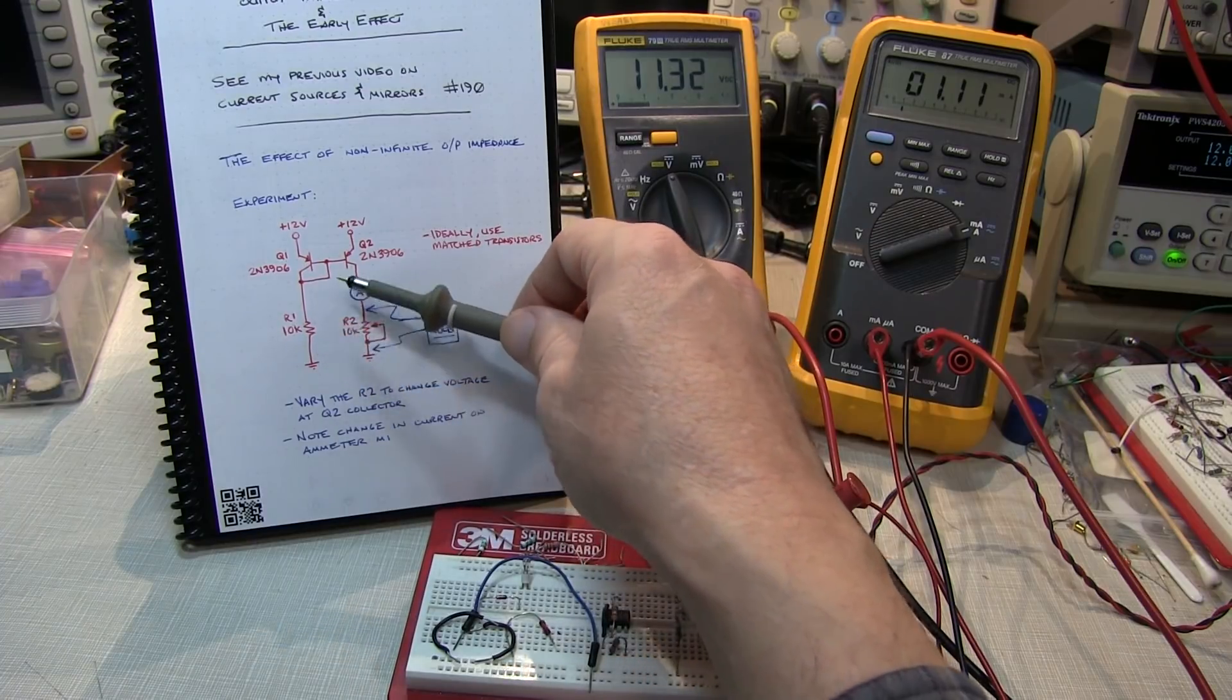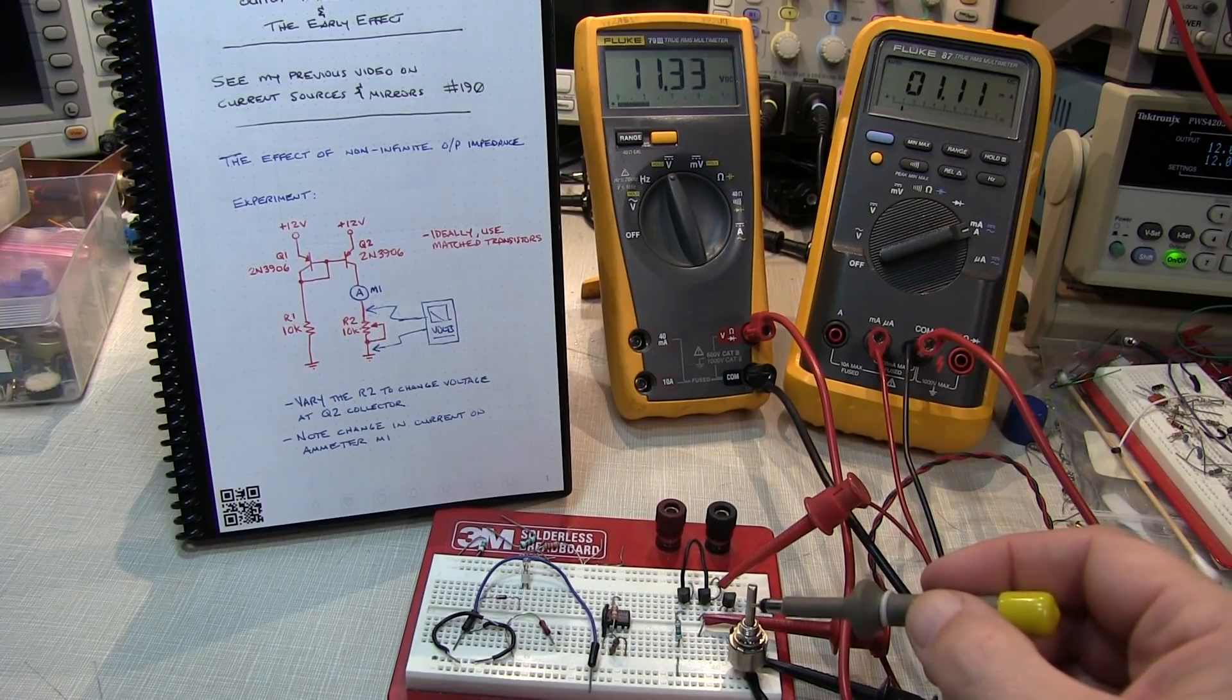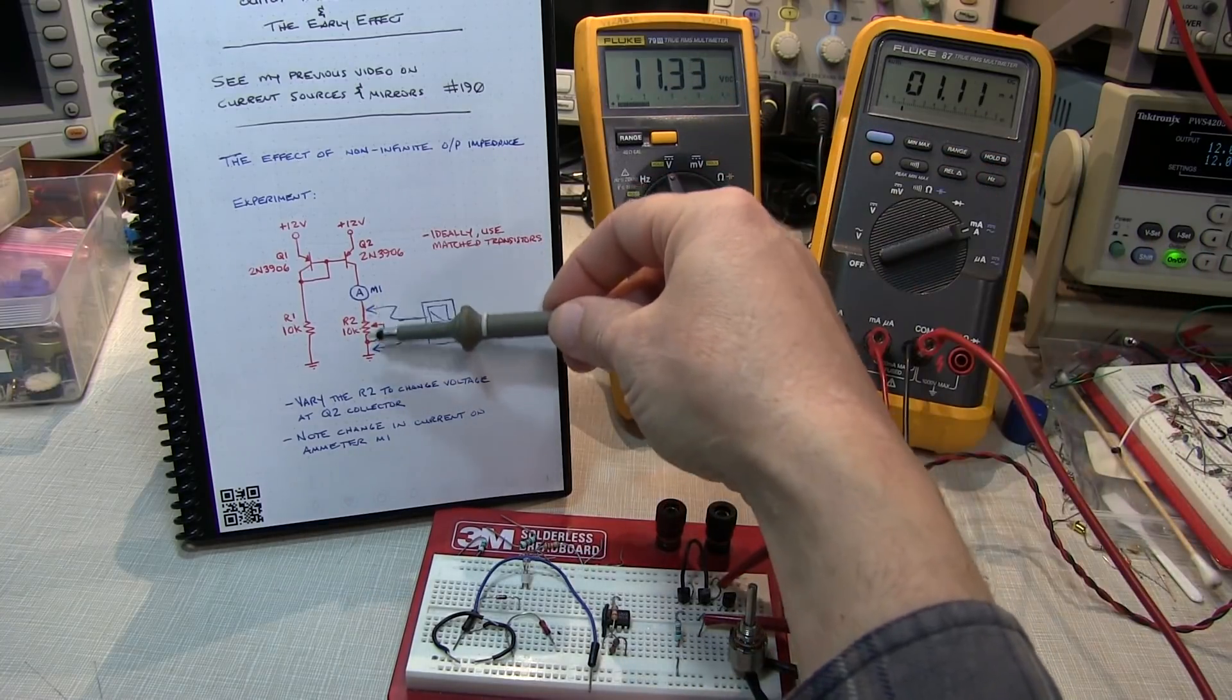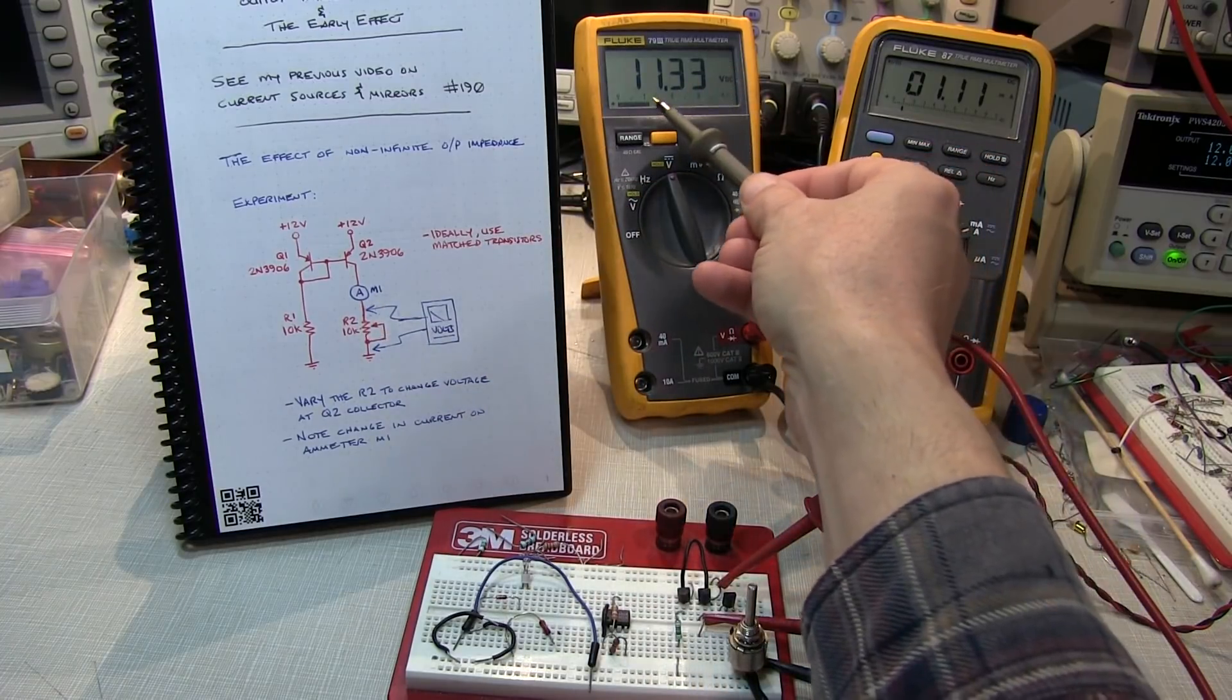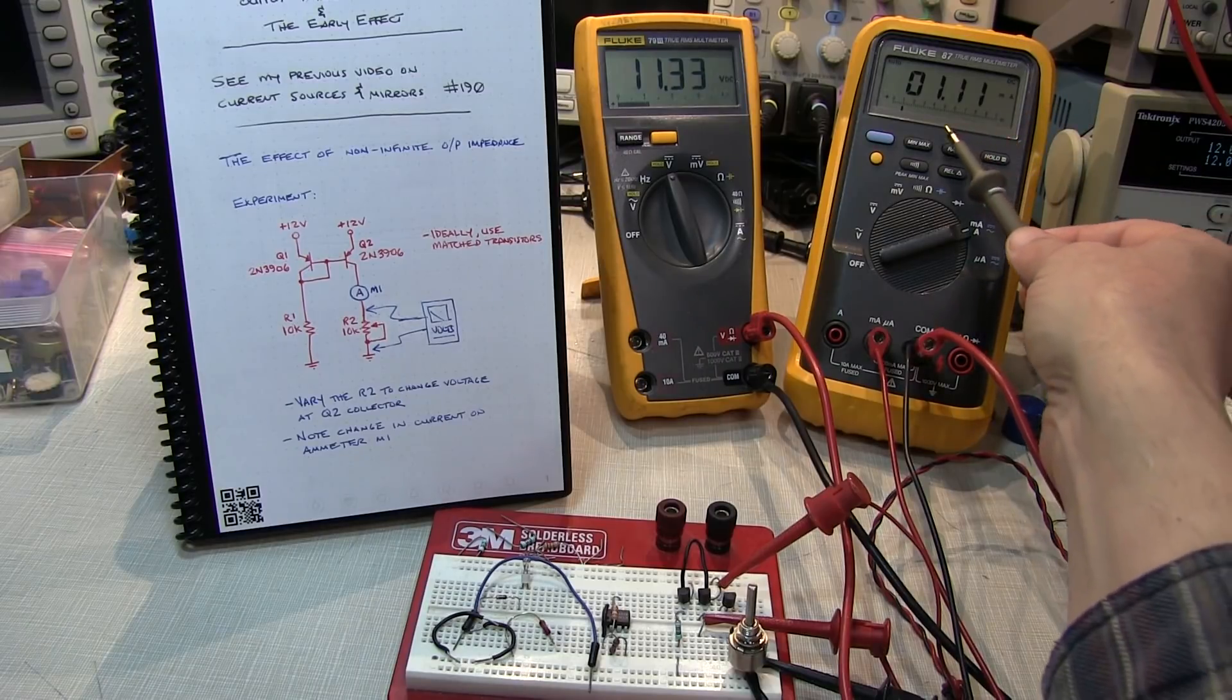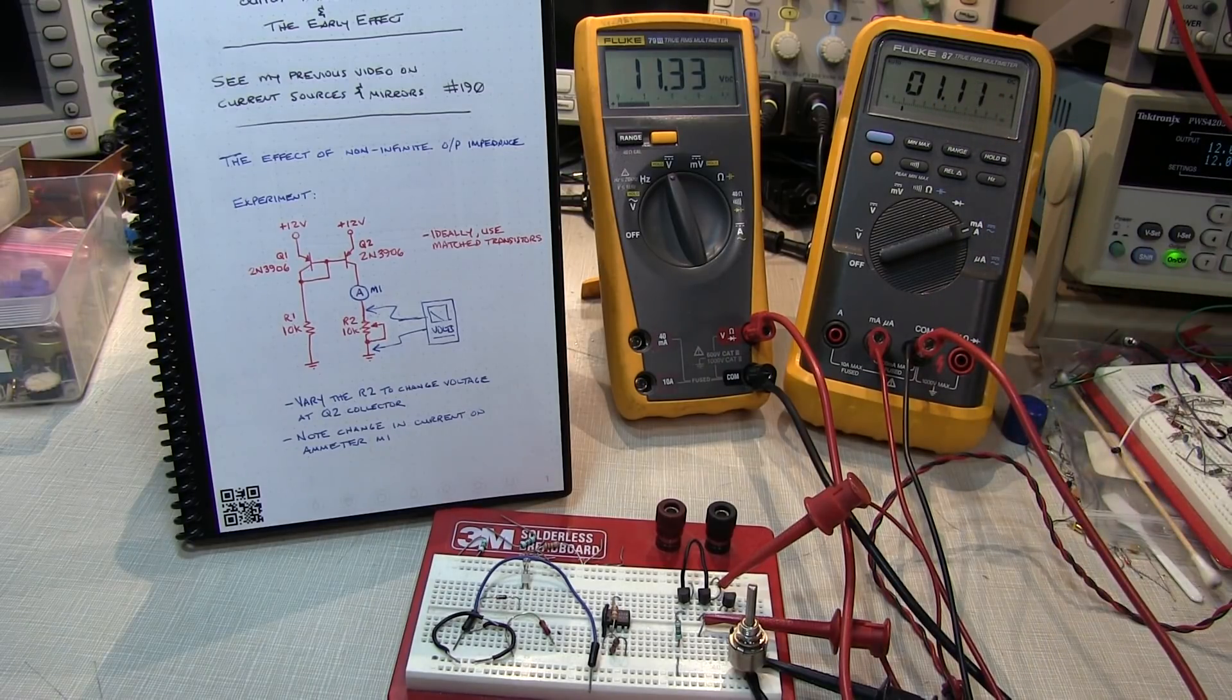With the potentiometer dialed up to 10K, we can see the voltage across that potentiometer is about 11.3V, like we expect, and our current 1.11, 1.12 milliamps, like we expect.